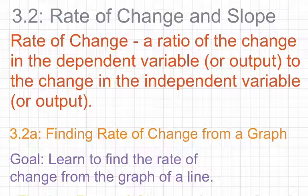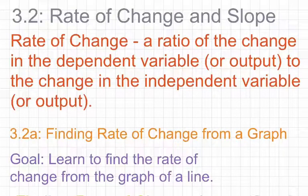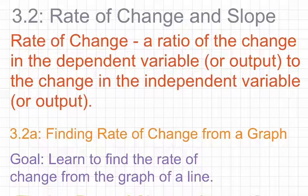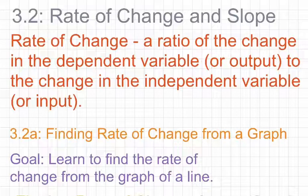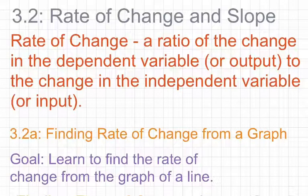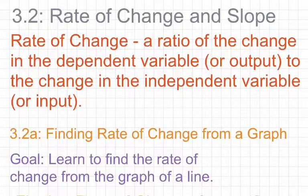Rate of change is something that's going to be extremely important to us for at least the rest of second quarter and into third quarter. So we need to make sure we have a good grasp of what rate of change and slope is all about. We'll understand what rate of change is and how to use it. Our definition for rate of change is it's a ratio — a ratio of the change in the dependent variable or output to the change in the independent variable or input. Input and independent both start with the word 'in,' and those are going to be what we find in our denominators.